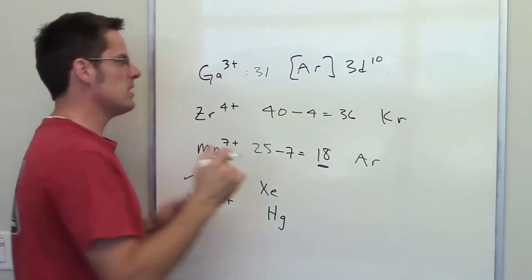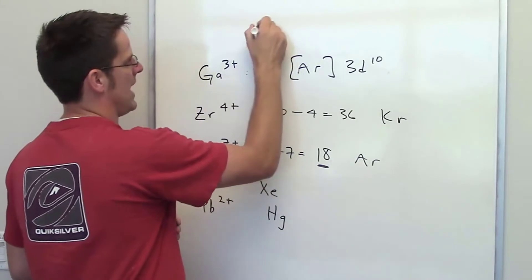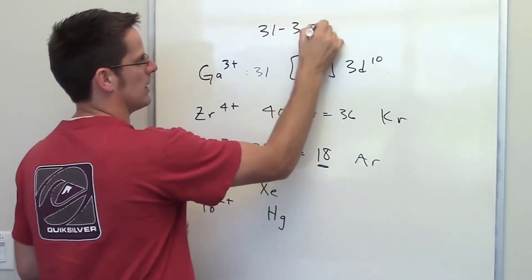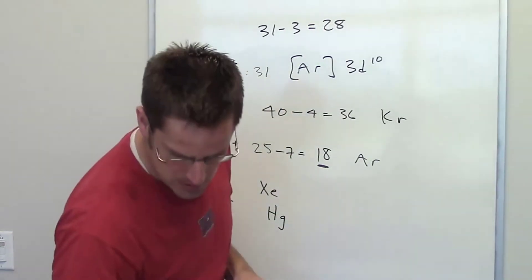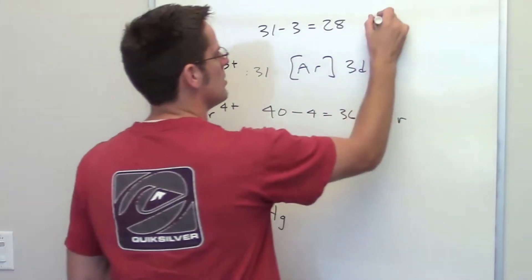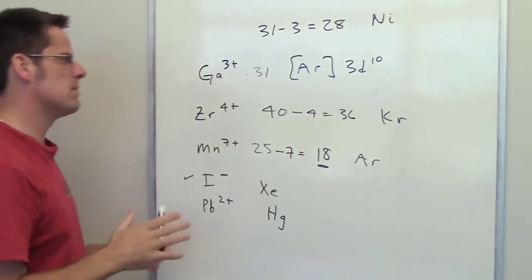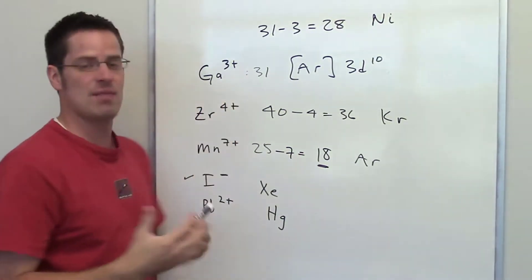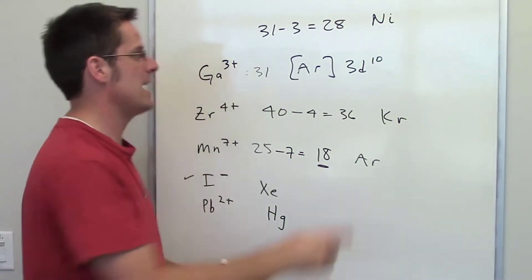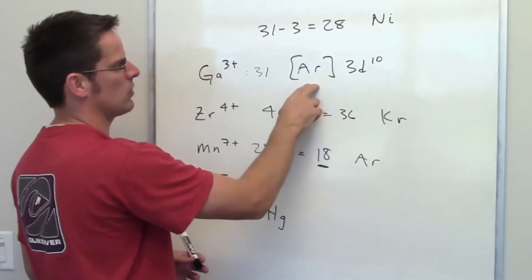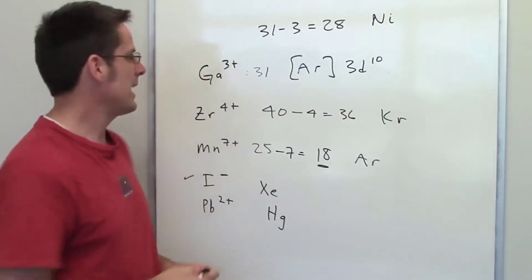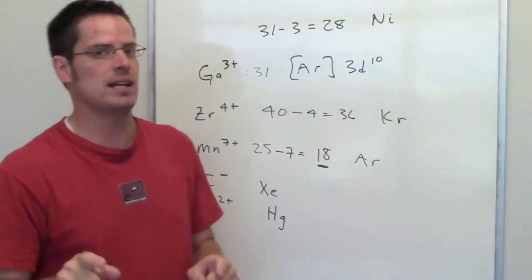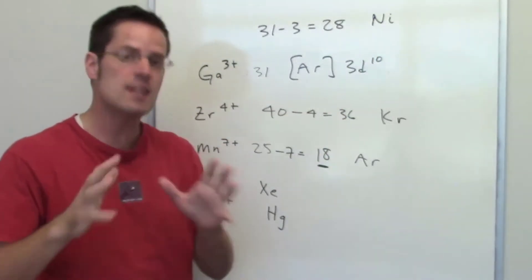And when I tell you that gallium 3+ is isoelectronic with whatever element is element number 28, that happens to be nickel, you might be confused. You might think, wait a minute, gallium 3+ doesn't have the same electron configuration as neutral nickel. It's got an electron configuration of argon 3d10. And that's absolutely true. Gallium 3+ doesn't have the same electron configuration as neutral nickel.